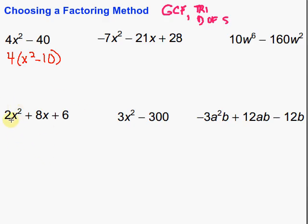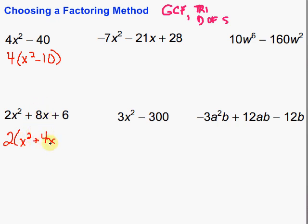Let's take a look at this next one: 2x² plus 8x plus 6. Again, the first thing we want to do is look for that greatest common factor. A quick way to check is to look at the smallest numbered term and see if it divides into each of the other pieces. In this case there is a 2 — all terms are even. So I take a 2 out front: 2 times (x² plus 4x plus 3).